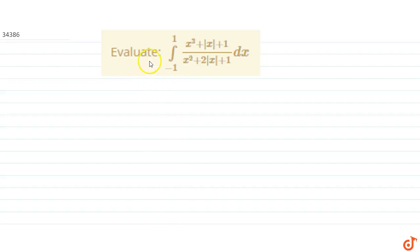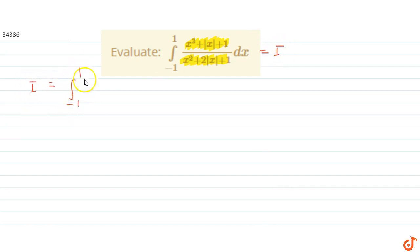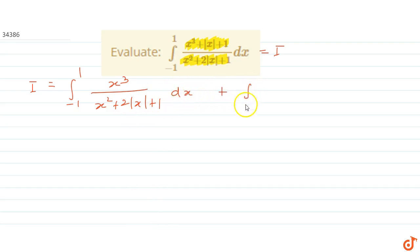In this question we have to evaluate the integral from -1 to 1 of (x³ + |x| + 1) divided by (x² + 2|x| + 1) dx. Let this integral be I. We can write I as the integral from -1 to 1 of x³/(x² + 2|x| + 1) dx plus the integral from -1 to 1 of (|x| + 1)/(x² + 2|x| + 1) dx.